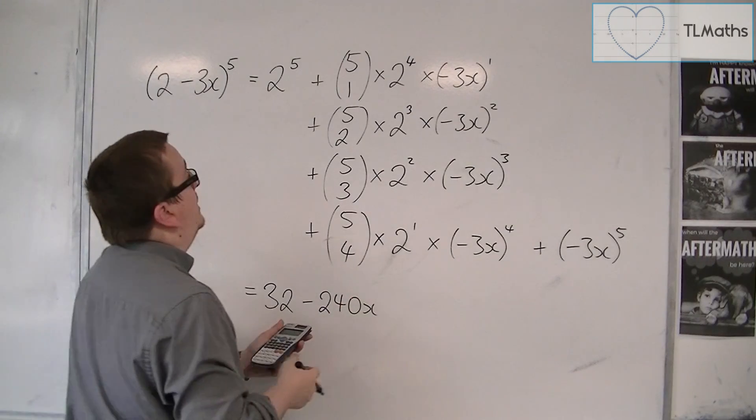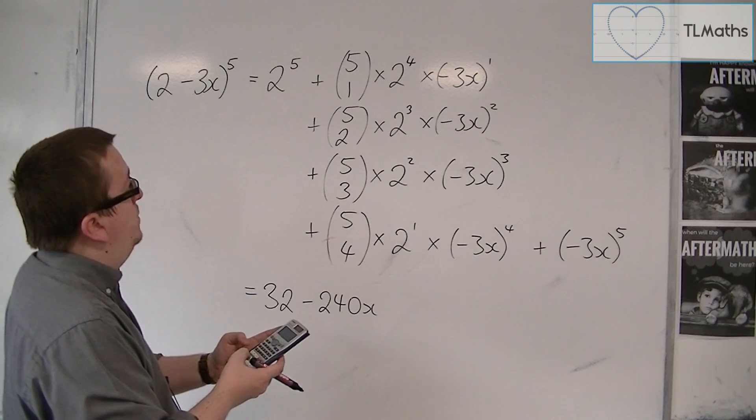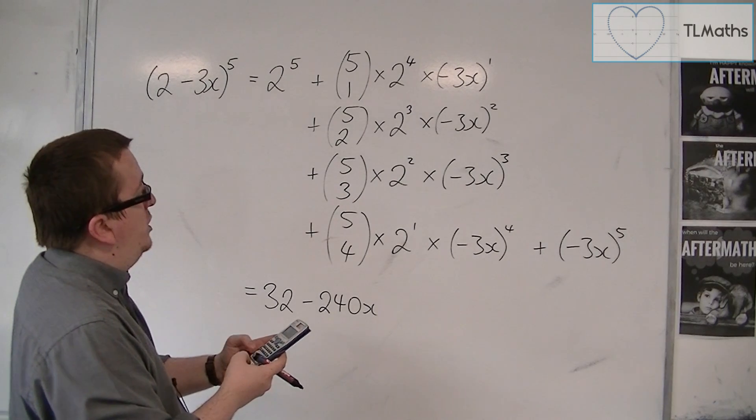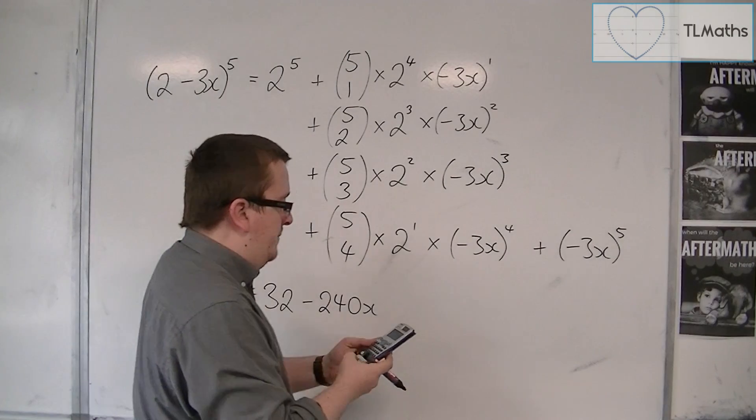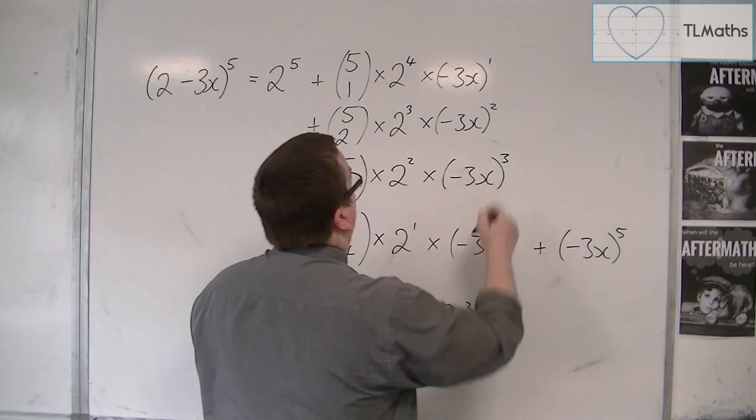Then we have this term, so 5 choose 2, times by 2 cubed, times by minus 3 squared, and that gets me 720x squared.